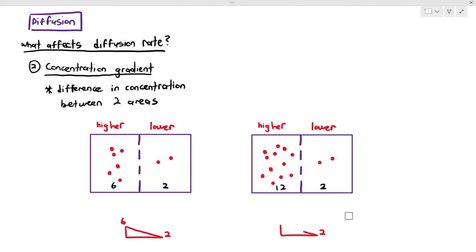And when you compare the gradient, A has a less steep concentration gradient, and B has a steeper concentration gradient. And the steeper the concentration gradient, it will actually cause a higher diffusion rate.